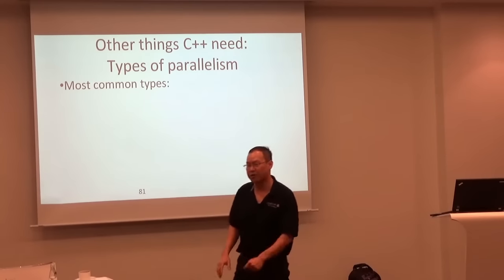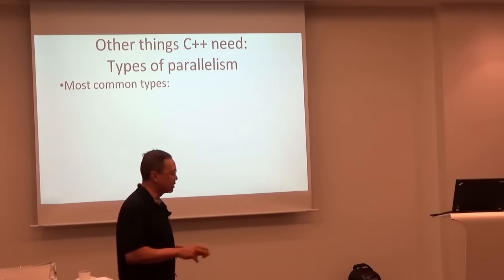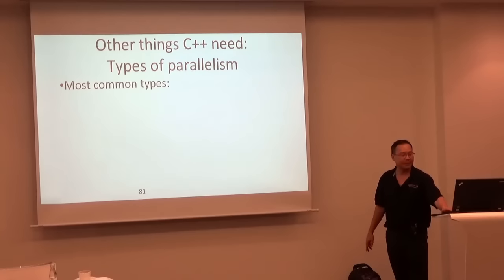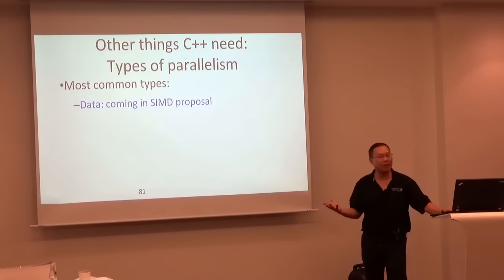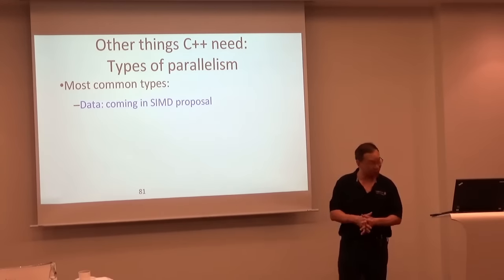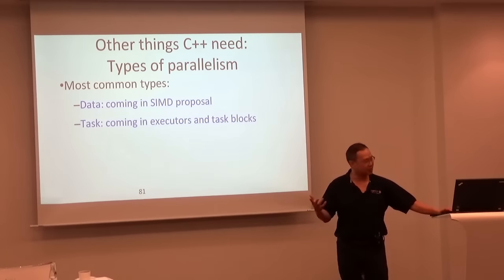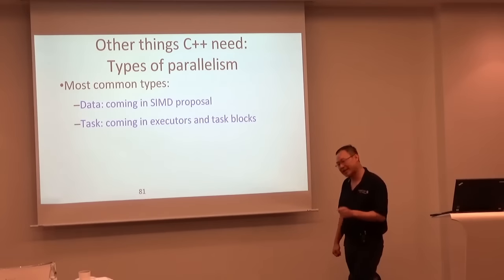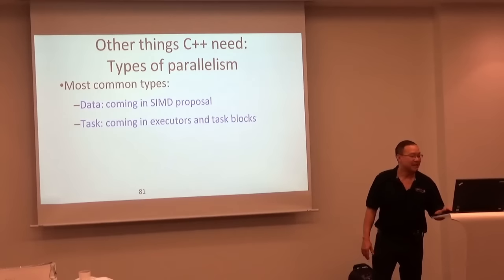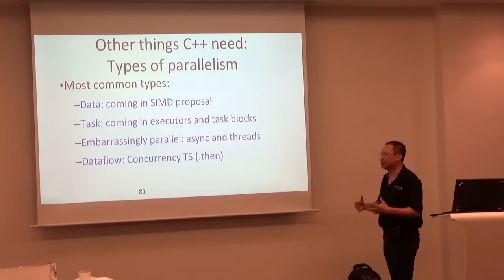We've got the OpenMP accelerator model, the parallel TS model, and the concurrency model. Unfortunately, none of C++ currently supports massive parallelism in the form of accelerators yet. They still need things like how to handle data — that's coming in a SIMD proposal. A SIMD proposal was attempted in Kona but both sides couldn't quite agree. Task blocks are now accepted into TS2. Executors are the missing component needed to dispatch to a massively parallel system. For embarrassingly parallel cases we've got async and threads. Data flow still needs dependencies.